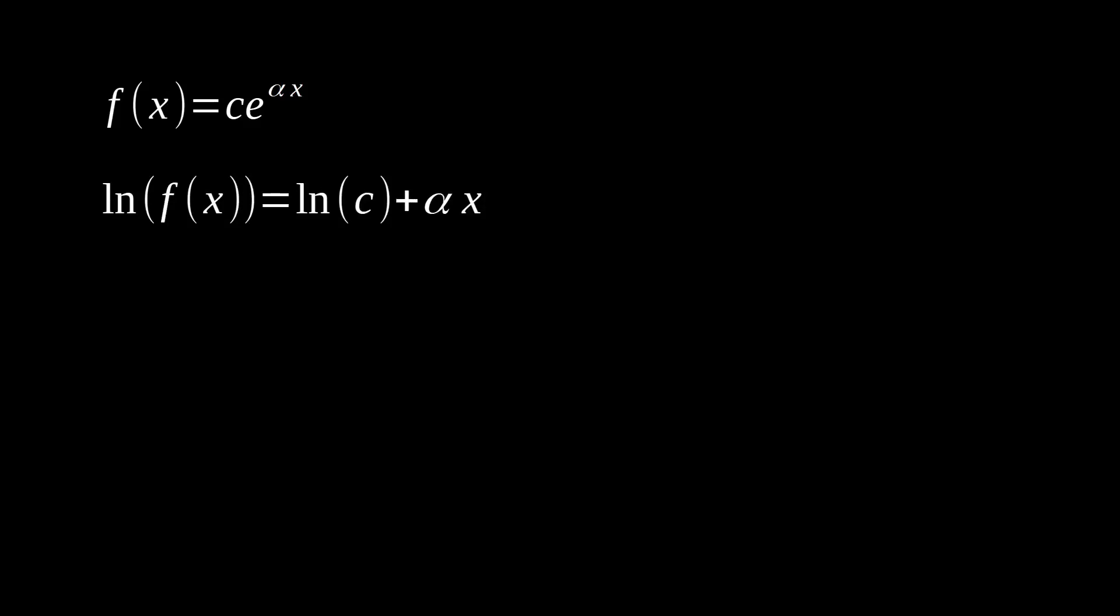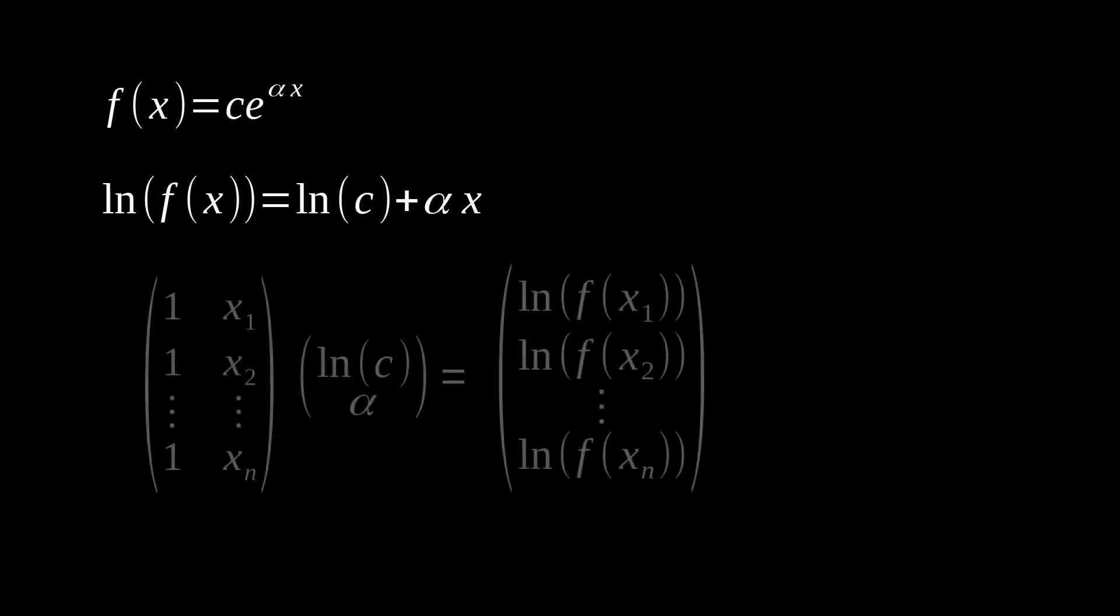We can simply just take the natural log of both sides of our equation and see now that we get something that looks like a polynomial. Here we have our x to the first power term, here we have our x to the zero term, so we can construct the following linear system.